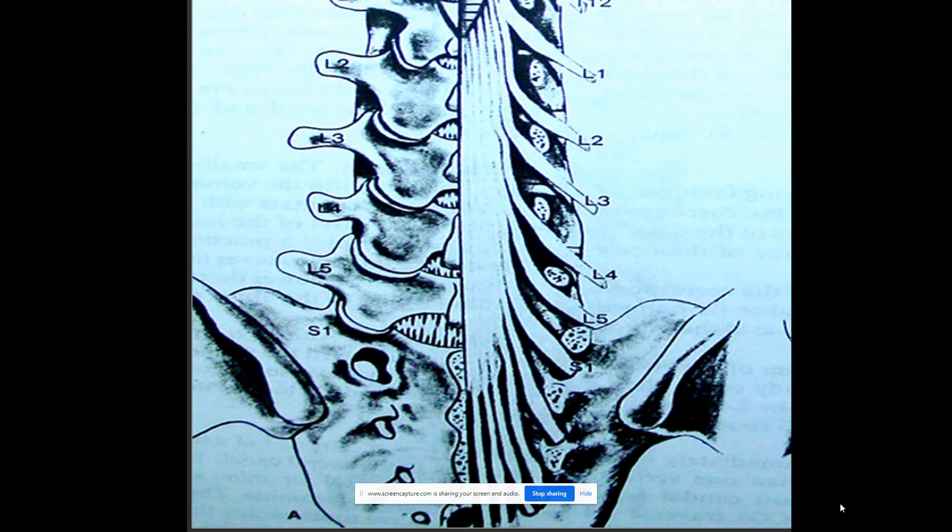First with a burr and then finishing it with a Kerrison punch. Basically, if you can find the S1 nerve root and then track it rostral and look lateral, you should be able to find the L5 nerve root.